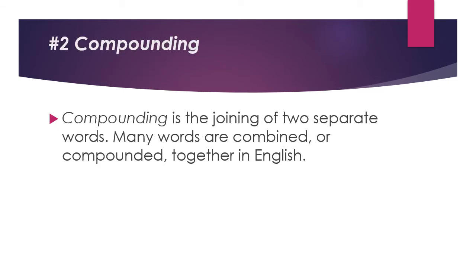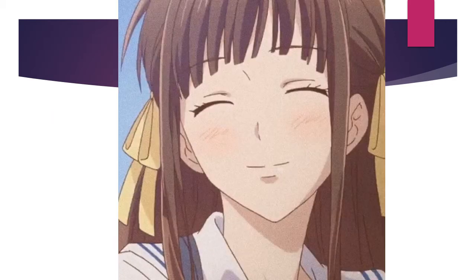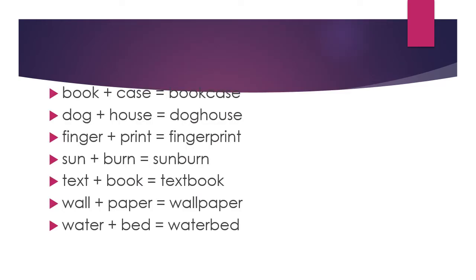Number 2 is Compounding. Compounding is the joining of two separate words to become one, and many words are combined or compounded together in English. Examples of compounding are: book plus case gives us bookcase; dog plus house gives us doghouse; finger plus print gives fingerprint; sun plus burn gives sunburn; text plus book gives textbook; wall plus paper gives wallpaper; water plus bed gives waterbed. If you combine two different words, it will result in a word with a completely different meaning from the original two.